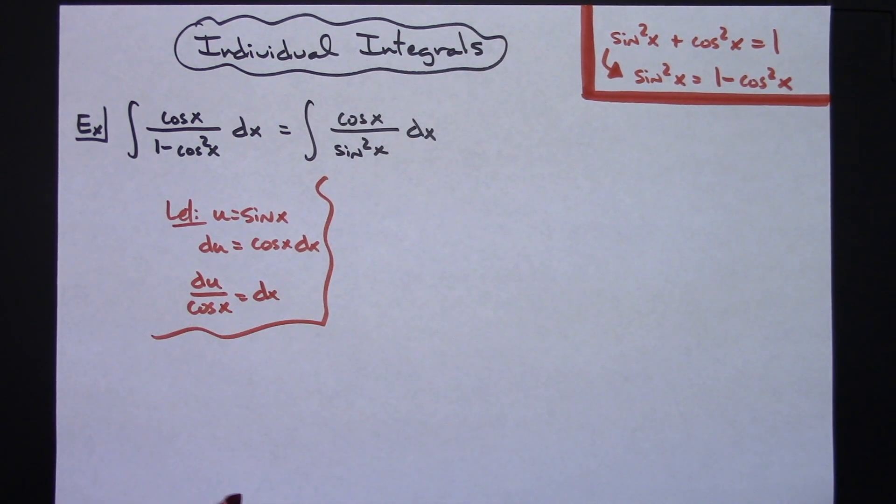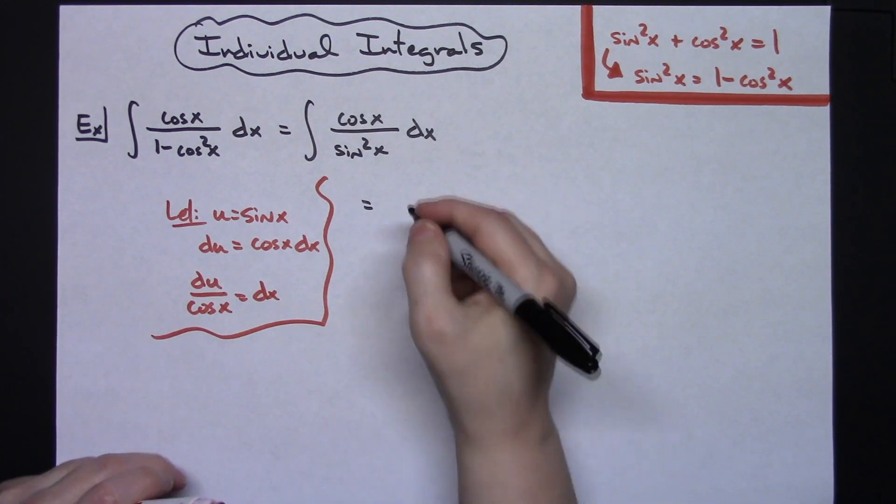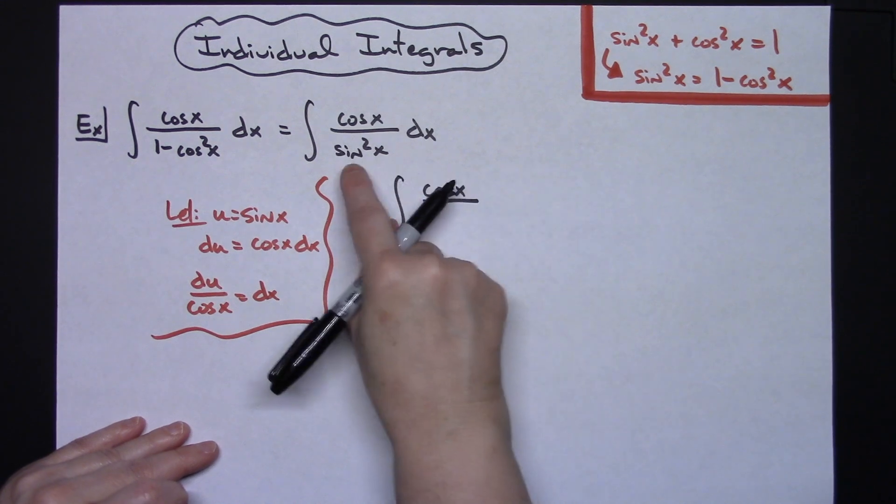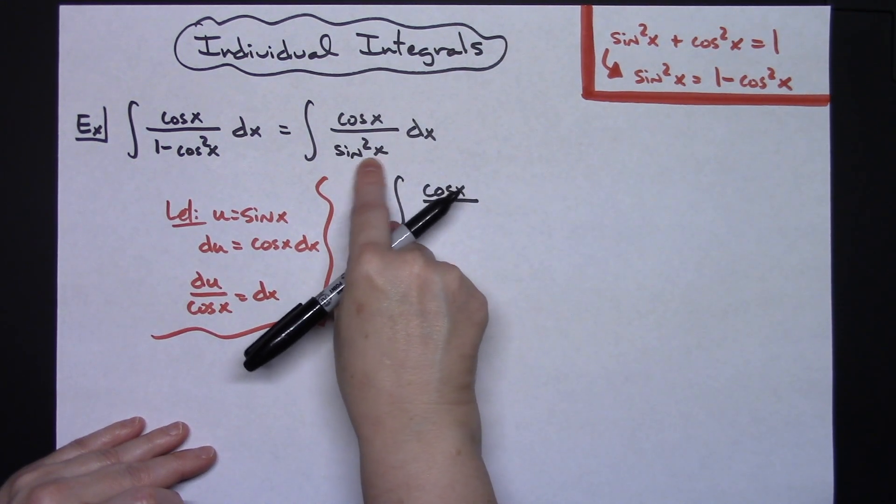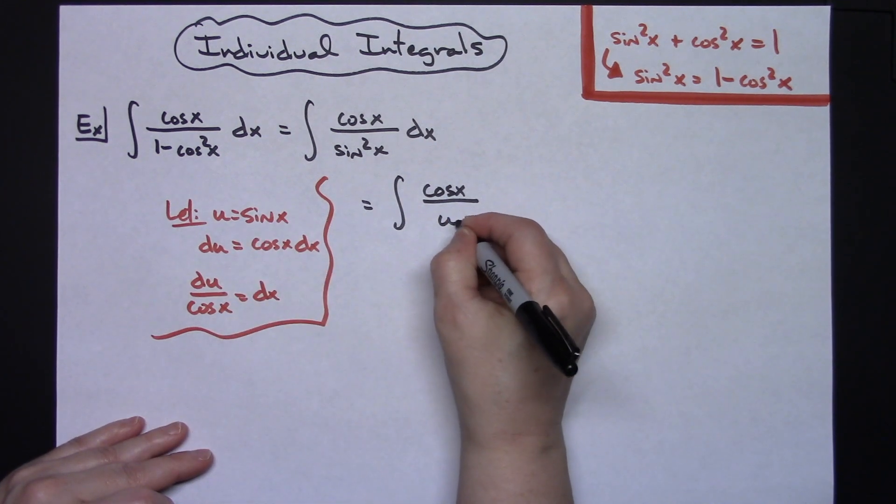So straightforward u substitution here. I'm going to come up here and do some substituting. So I'll have the integral. Cosine x is going to stay the same. My sine x squared here I let u be sine x. So then I'm going to have u squared on the bottom.